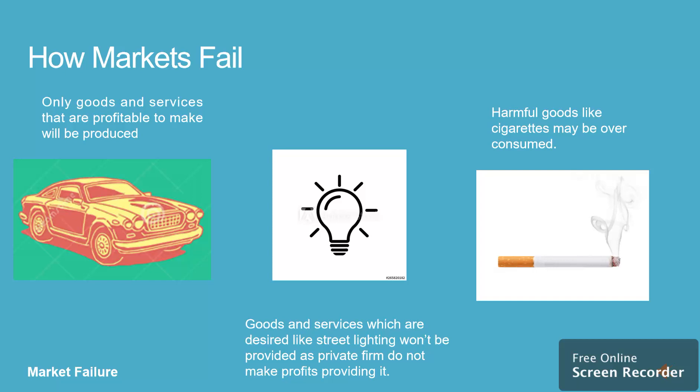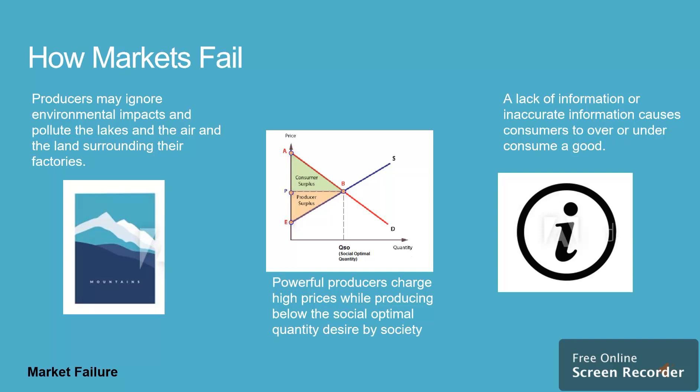Harmful goods like cigarettes may be over-consumed. Producers may ignore environmental impacts and pollute the lakes, the air, and the land surrounding their factories. Powerful producers charge high prices while producing below the social optimal quantity desired by society. A lack of information or inaccurate information causes consumers to over- or under-consume goods.